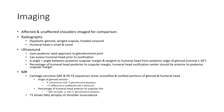Imaging: affected and unaffected shoulder imaging for comparison. Radiograph findings include dysplastic glenoid, winged scapula, and dysplastic coronoid. Ultrasound: the humeral head is small and mobile.